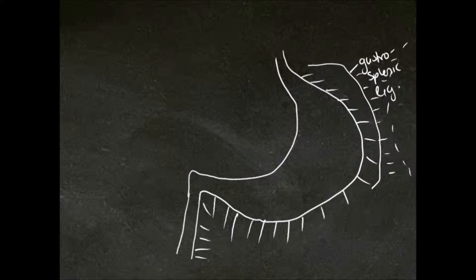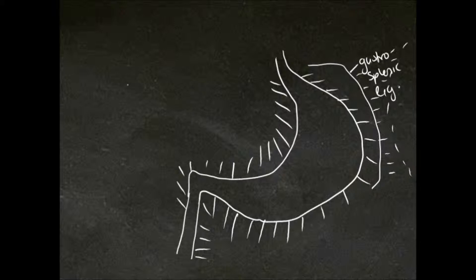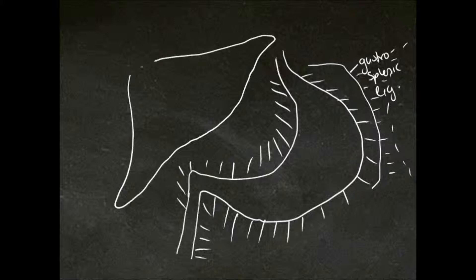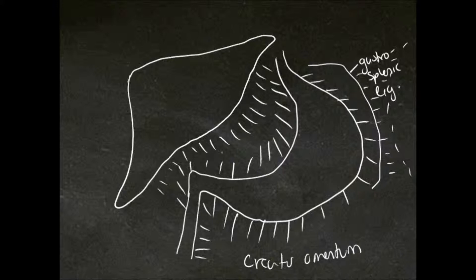Moving on to the lesser omentum now. This is attached to the lesser curvature of the stomach and the first part of the duodenum, and it's attaching to the posterior part of the liver — here's the liver here — going to the posterior part of the liver. So down here is the greater omentum and here is the lesser omentum.